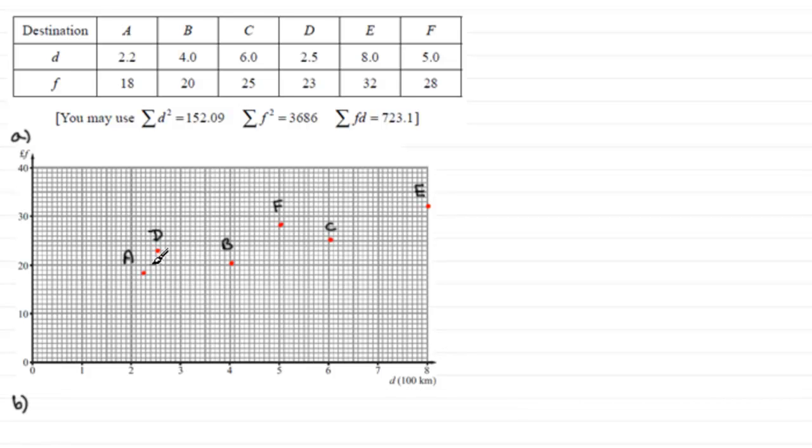Well clearly you can see from the scatter diagram that the points lie generally somewhere around a line, a straight line going through something like this.